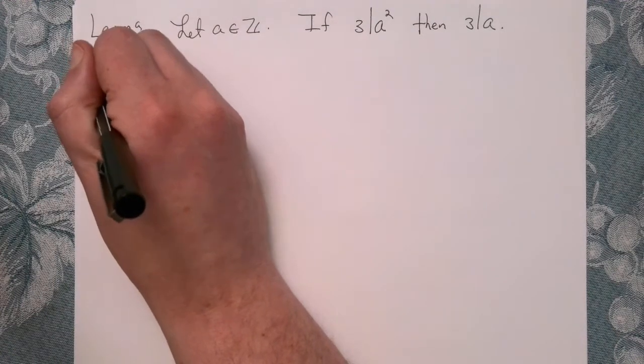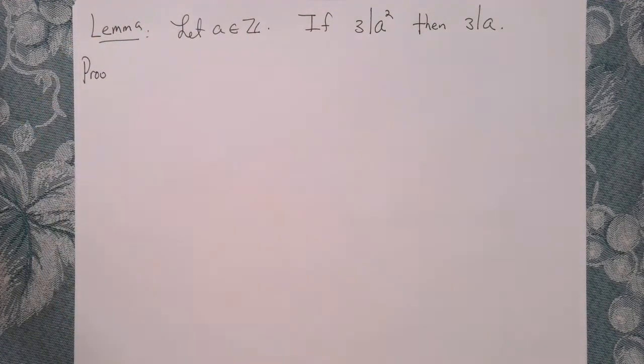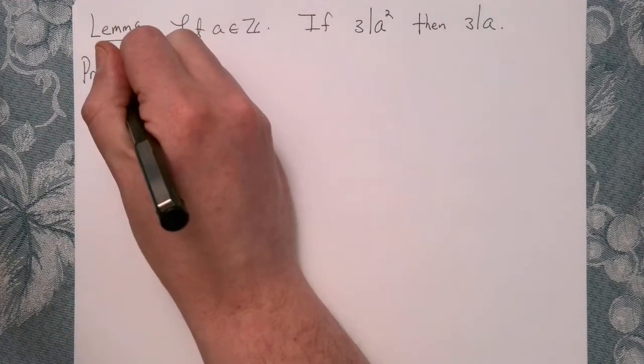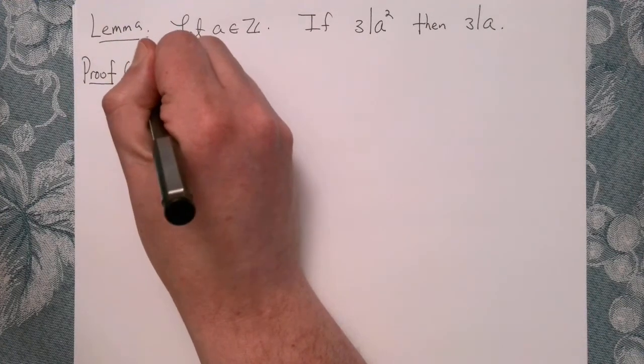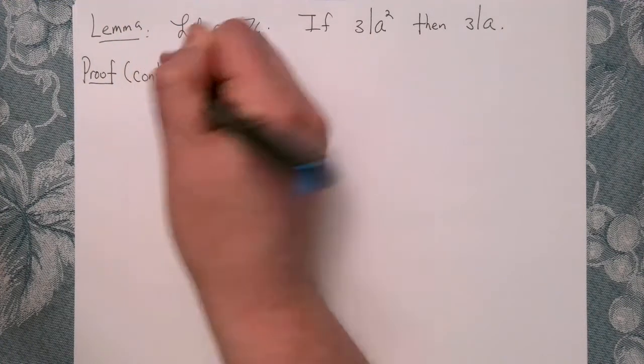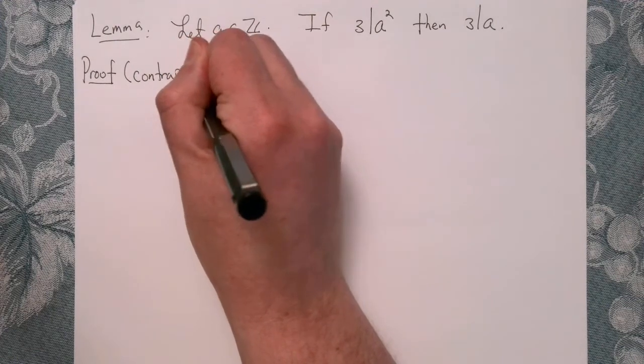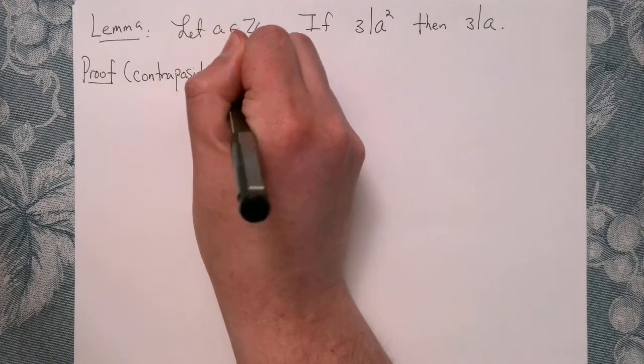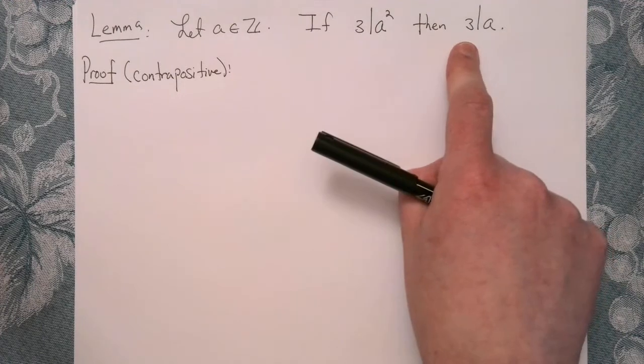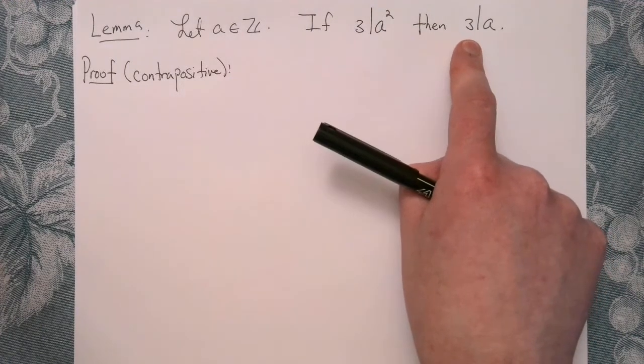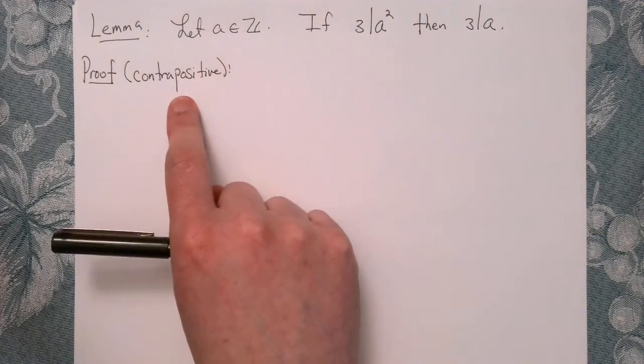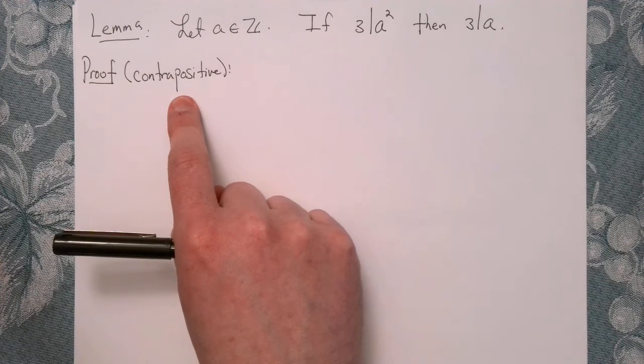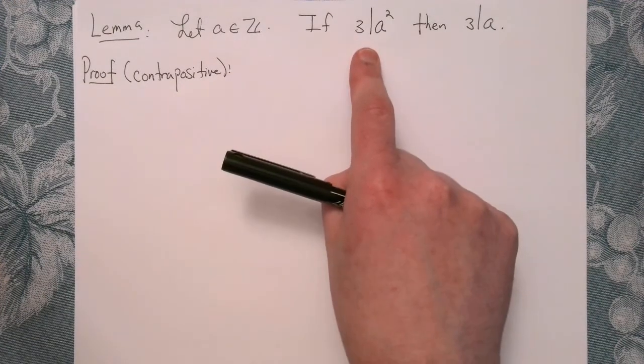So we're going to say proof. Our proof is by using the contrapositive. And so remember, if this is P and this is Q, we want to assume not Q when we use proof by contrapositive. And then we want to, as a result, show that not P follows.